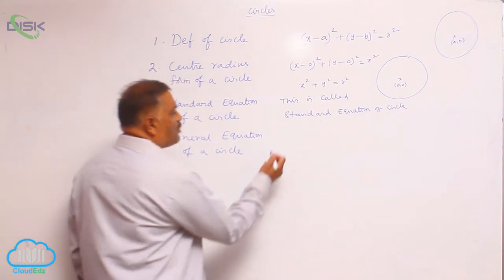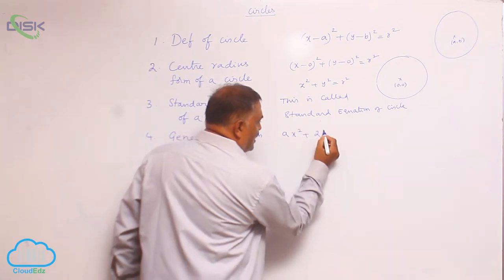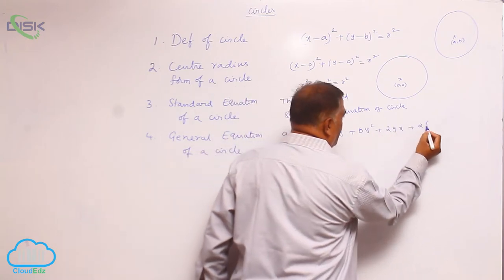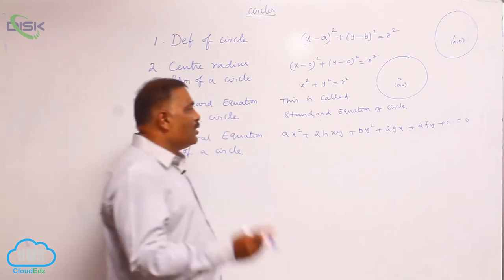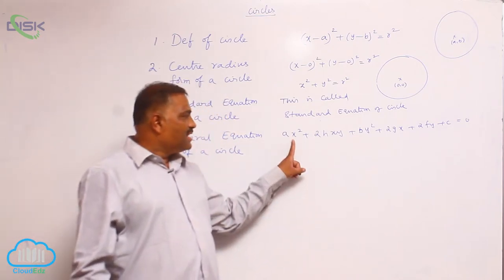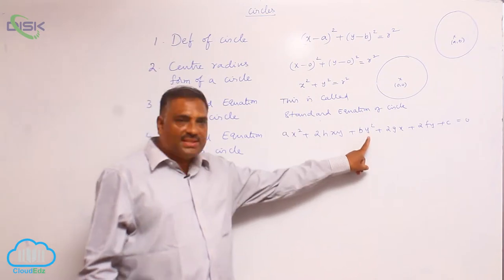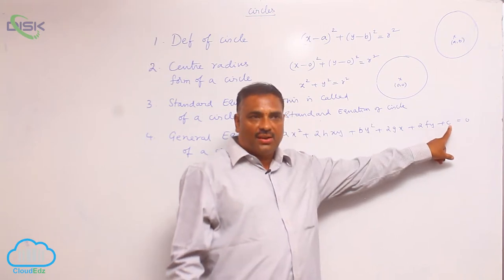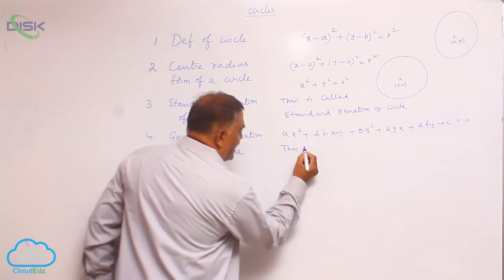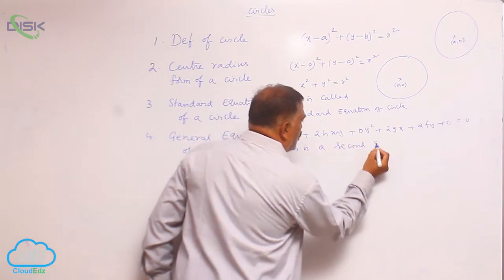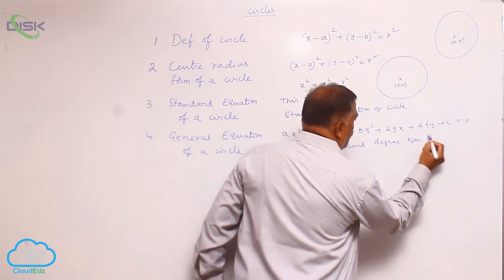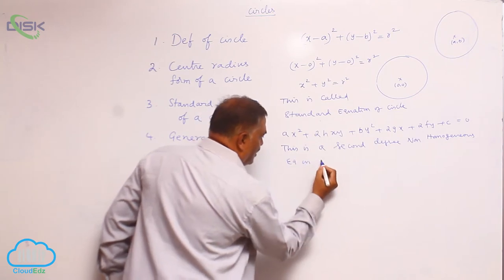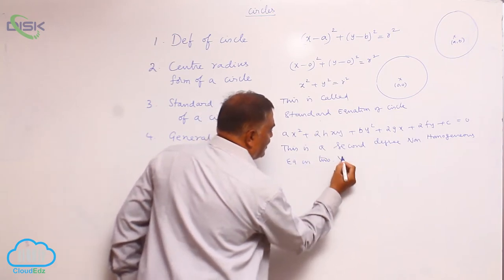Coming to one more point, let us consider the equation: ax square plus 2hxy plus by square plus 2gx plus 2fy plus c is equal to 0. We observe that x square, xy, and y square are second degree; x and y are first degree; and the constant has no degree. So this is a second degree non-homogeneous equation in two variables x and y.